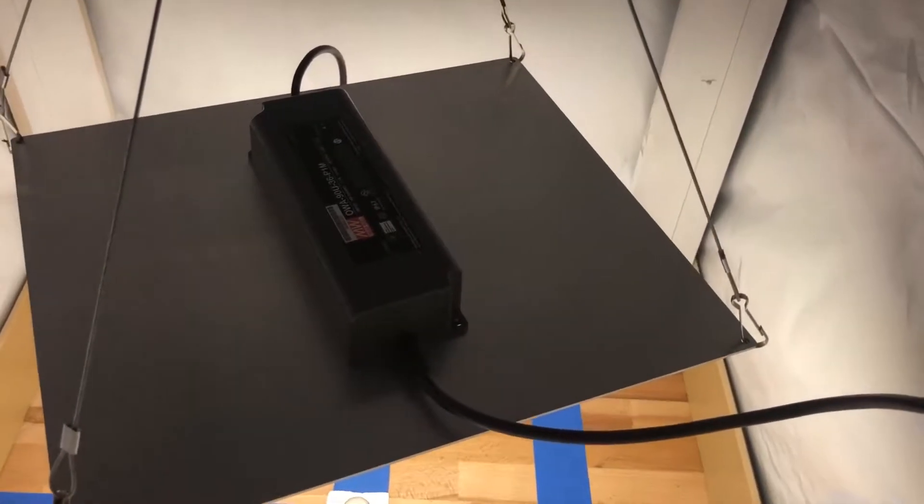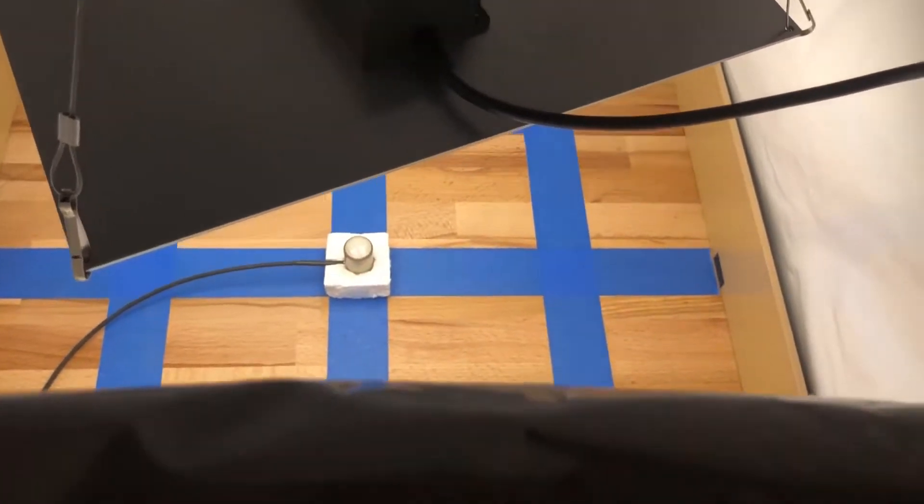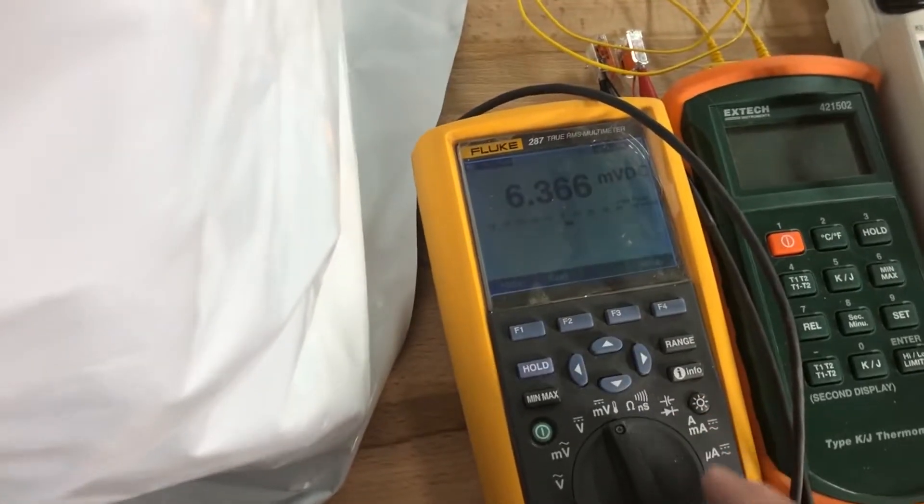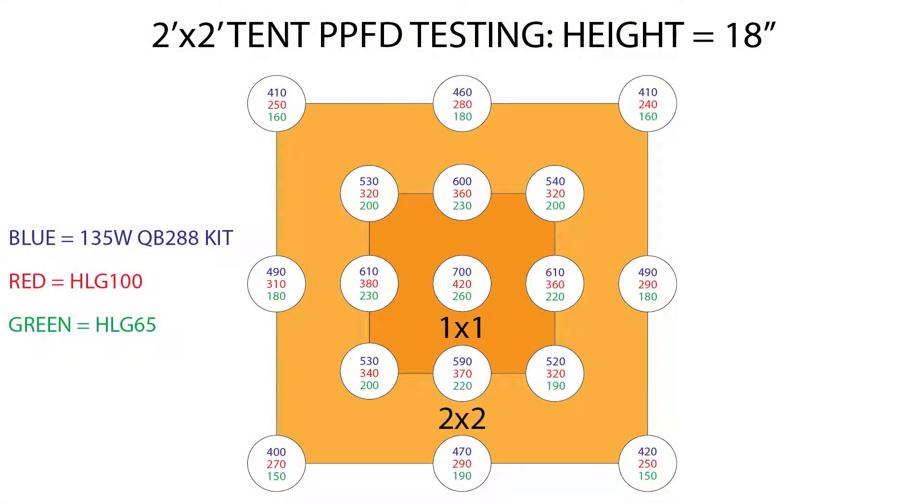Next, I took PPFD measurements for the three kits, and they all pretty much ended up where I thought they would. I used my Apogee SQ500 PAR sensor and a Fluke 287 multimeter to get these results, and took measurements at a distance of 18 inches from the boards to the top of the sensor, as well as 12 inches from the boards to the top of the sensor. To make it easier to compare, I've stacked the results all into a single PPFD chart. So the numbers in blue text that you see are the measurements that I got for the 135 watt kit, the numbers in red are for the HLG100, and the numbers in green are for the HLG65, and we're going to start with measurements taken at 18 inches from the sensor.